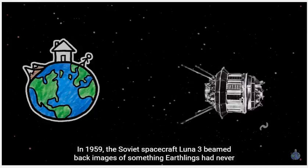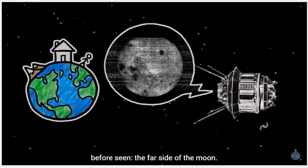In 1959, the Soviet spacecraft Luna 3 beamed back images of something Earthlings had never before seen – the far side of the Moon.